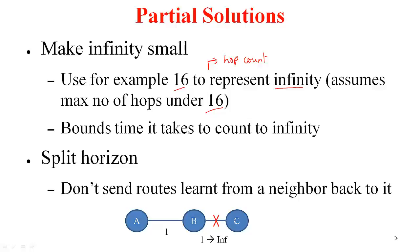Another approach typically used is split horizon: do not send routes learned from a neighbor back to it. For example, suppose the B-to-C link has failed, and before B could send the triggered update to A, A sends a message saying it can reach C at a cost of 2. B is now going to set the next hop to A. In response to the message from B, A thinks B has a route and B thinks A has a route, leading to the counting to infinity problem.